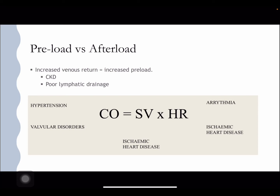You get increasing stretching of the right atrium and subsequently the right ventricle, which subsequently causes the heart to go into a state of constant hypertrophy, as described by Starling's curve previously, and result in failure. Disease states like chronic kidney disease and even poor lymphatic drainage can result in an increased venous return, increased preload, and contribute to heart failure.